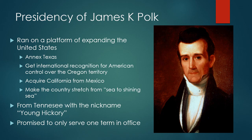This brings us to the presidency of James Knox Polk. He ran on a platform of expanding the size of the United States, with a couple of goals: annex Texas, get international recognition for American control over the Oregon Territory, and acquire California from Mexico. Doing all of these things would make the United States stretch from sea to shining sea, fulfilling the idea of Manifest Destiny. He was from Tennessee, a Jacksonian politician who nicknamed himself Young Hickory. He also unusually promised to serve only one term, aiming to accomplish all of these goals within that single term.